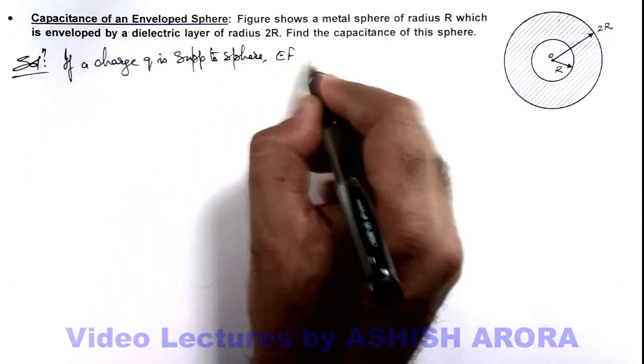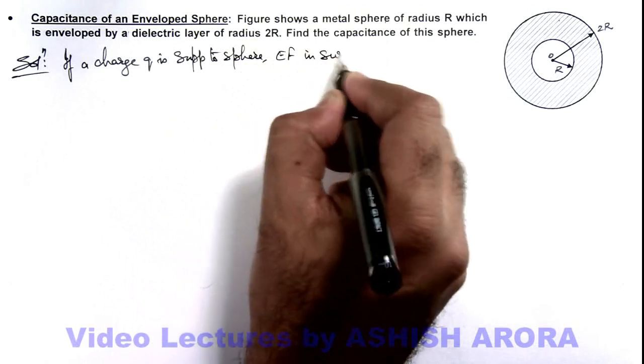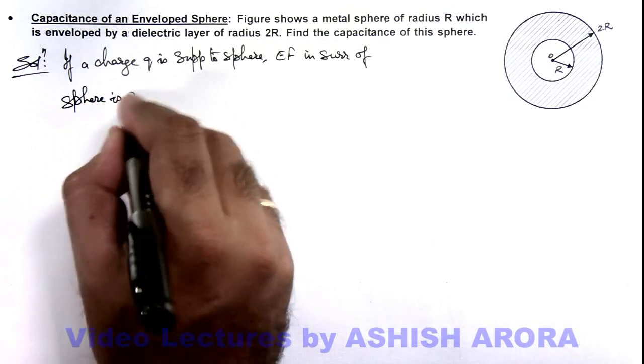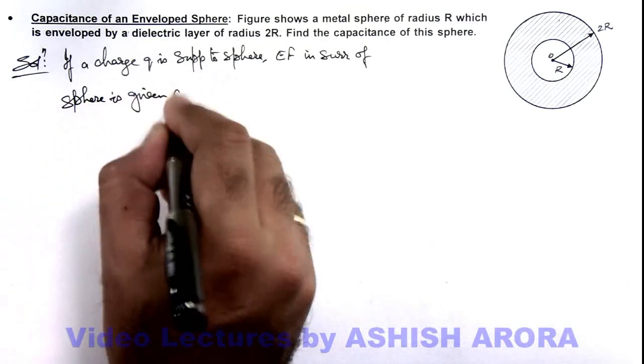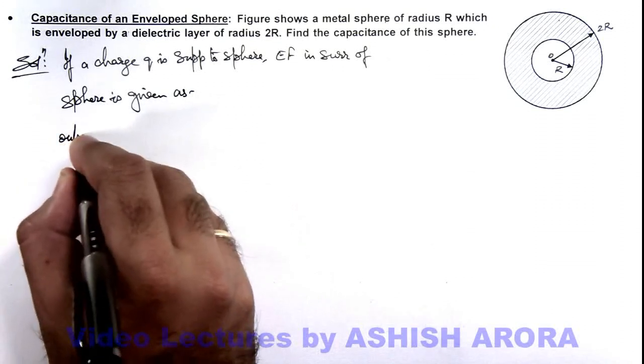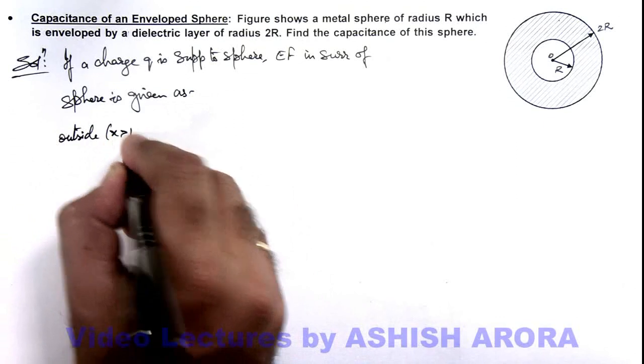Electric field in surrounding of sphere is given as: this electric field we can write outside, that is for x greater than R.